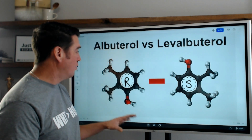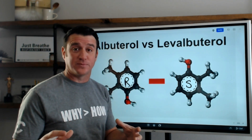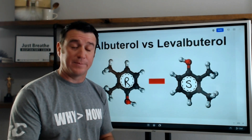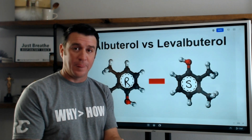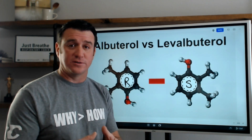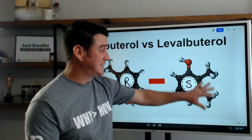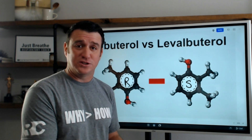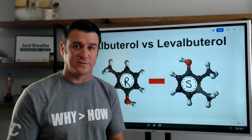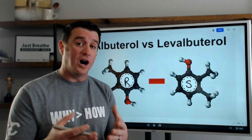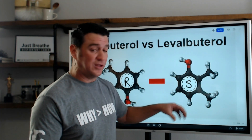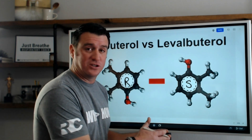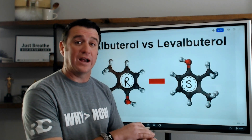Now, what does the R-isomer do? The R-isomer has very specific beta-2 qualities that enhance the beta-2 receptors, which are directly responsible for bronchodilation. When they looked at the S-isomer, they asked what effect does it have on the beta-2? Some studies show that it decreased the responsiveness of these beta-2 receptors. Other studies showed that when given in conjunction with an anticholinergic agent, the effects on the beta-2 receptors were actually nullified.